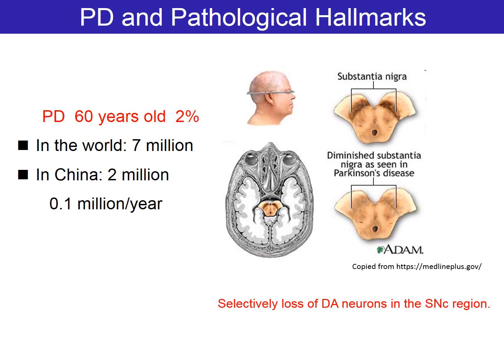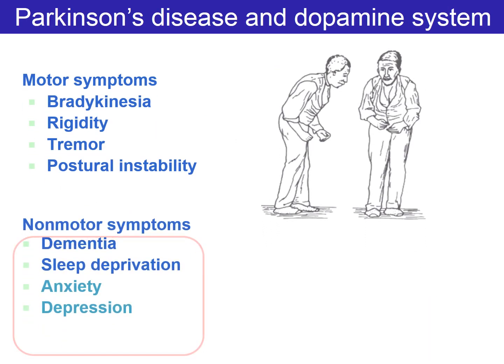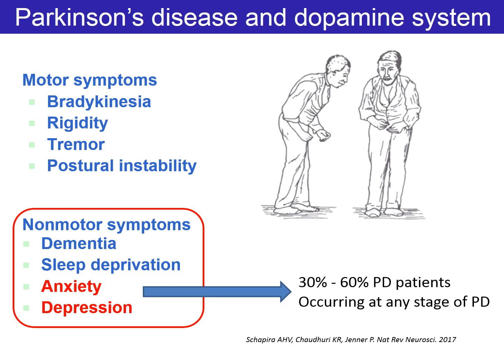Parkinson's Disease is a chronic, progressive neurodegenerative disorder characterized by a profound and selective loss of nigrostriatal dopaminergic neurons. Although the motor symptoms appear in old age, some non-motor symptoms such as emotional disorders occur in the early stage, and these are considered to be major factors in determining the health-related quality of life of Parkinson's Disease patients.